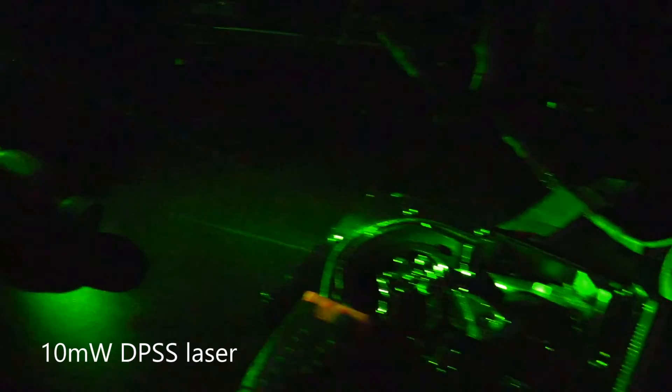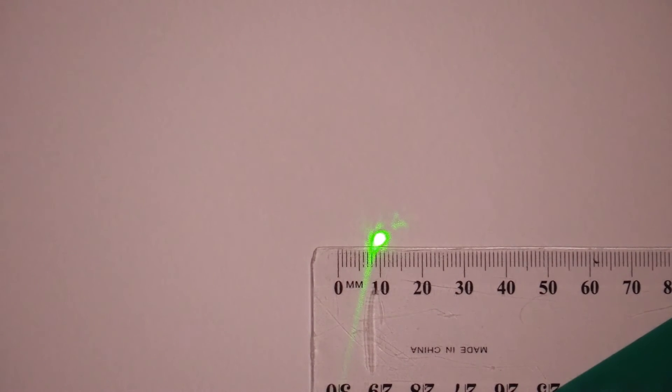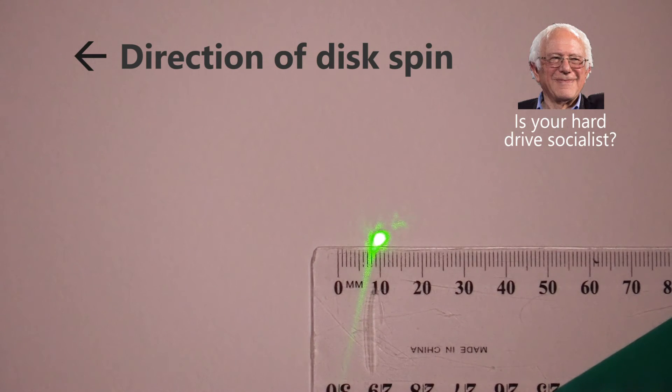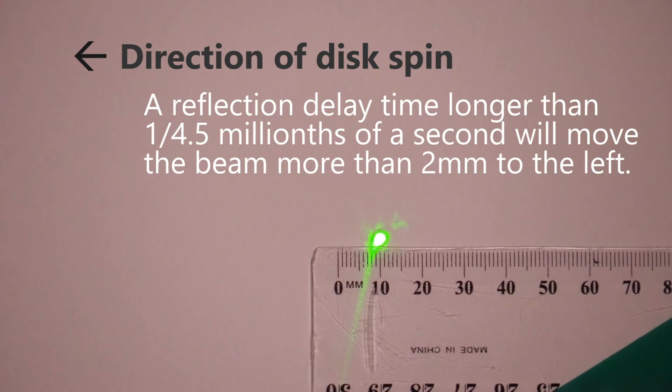I'll switch to a lower power green laser for the experiment as the violet laser was overexposing the camera. Let's look at the reflection across the room. The hard drive is spinning to the left. It's spinning counterclockwise. So if the reflection time is longer than 0.04 millionth of a second, there will be a movement to the left of at least 2mm. Let's spin it up and see what happens.